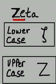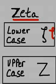Then zeta. Zeta. Lower case like so. Upper case like capital Z.